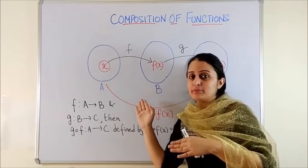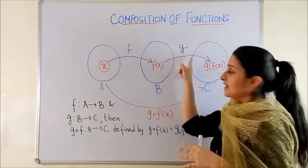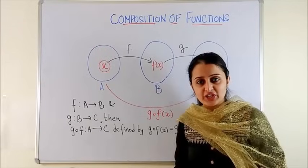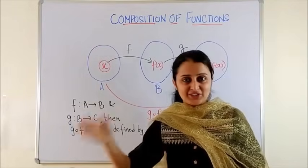Now taking this as the input for the next machine under the mapping G, it creates the final element which is G of Fx. So it's more like a chain reaction.